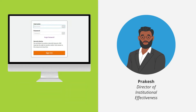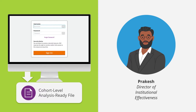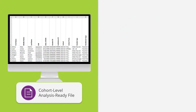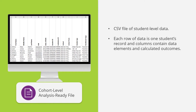Prakash downloads the analysis-ready files from the Clearinghouse's secure FTP site and explores the Cohort-Level Analysis-Ready file. He learns the Cohort-Level Analysis-Ready file is a CSV file of student-level data. Each row of data is one student's record, and each column contains data elements and calculated outcomes.